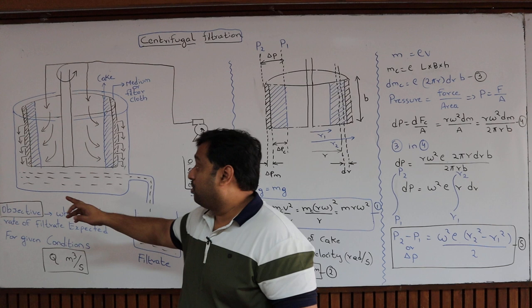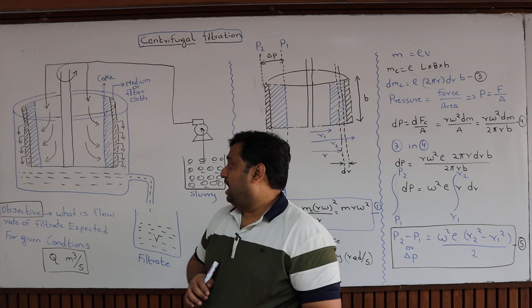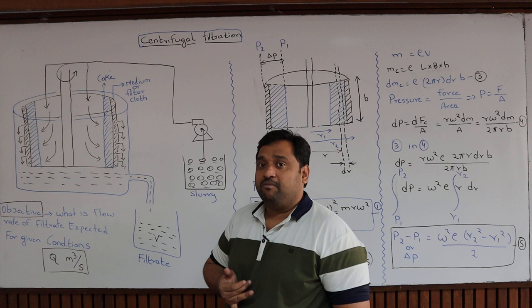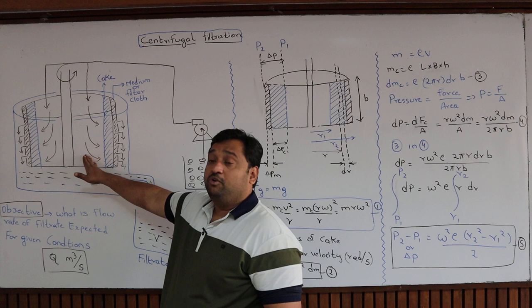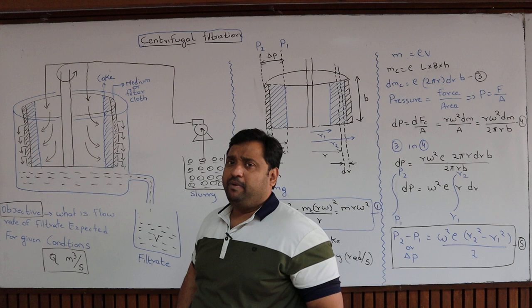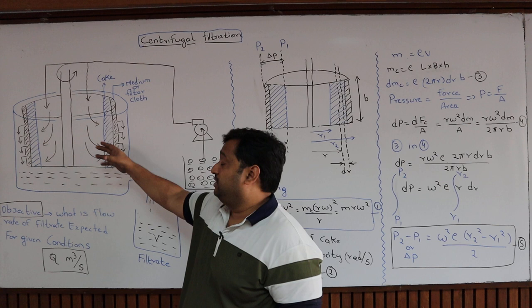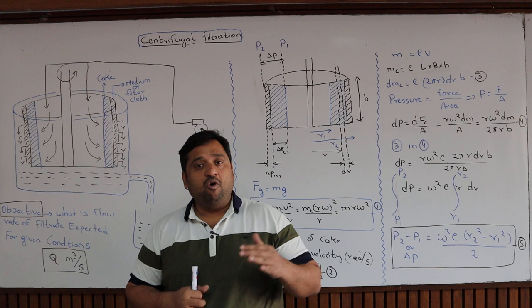The objective of the present derivation is to find the volumetric flow rate Q — that is, how much volume per unit time (m³/s) I can expect from this centrifuge, given its length, breadth, RPM such as 800 or 750 RPM, and concentration. So Q is our objective, and we will go through a derivation to arrive at Q, followed by a worked example.